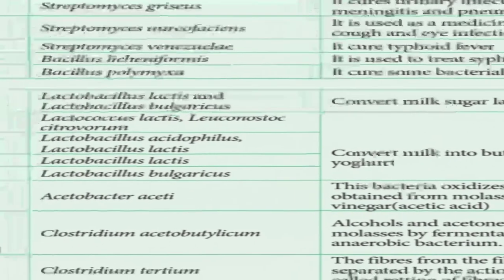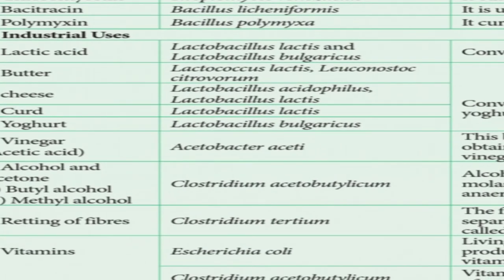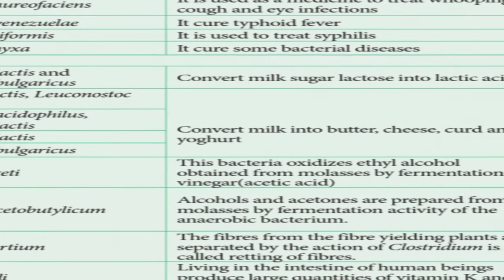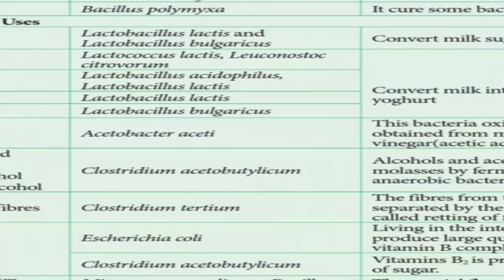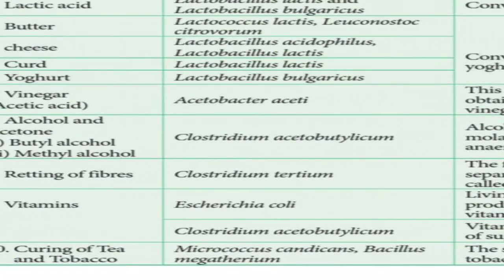Industrial uses: Lactic acid is produced by Lactobacillus lactis and Lactobacillus bulgaricus. They convert milk sugar lactose into lactic acid. Next is butter — produced by Lactobacillus bulgaricus, Lactococcus lactis, Leuconostoc and Citrovorum.